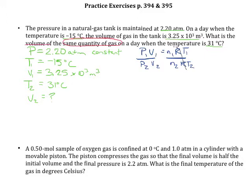I can cancel out anything else that remains constant. We decided pressure is constant, so those cancel to 1. They've also told us the quantity of gas is constant — same moles before and after — so N cancels to 1 as well. That means I'm only worrying about the relationship between the volumes and the temperatures, and I can rewrite the equation as V1 over V2 equals T1 over T2.